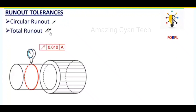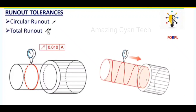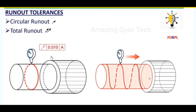The symbol used for circular runout is like an inclined arrow mark, a slanting arrow mark. And for total runout, two arrow marks connected by a horizontal line. So this is called the total runout symbol. Now let's see the difference between total runout and circular runout.